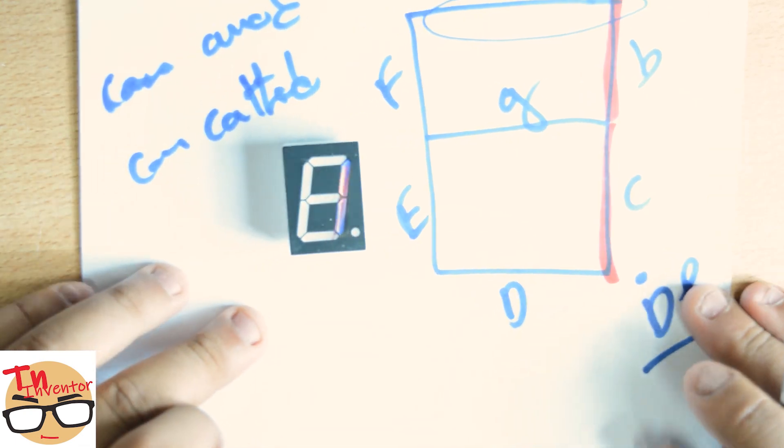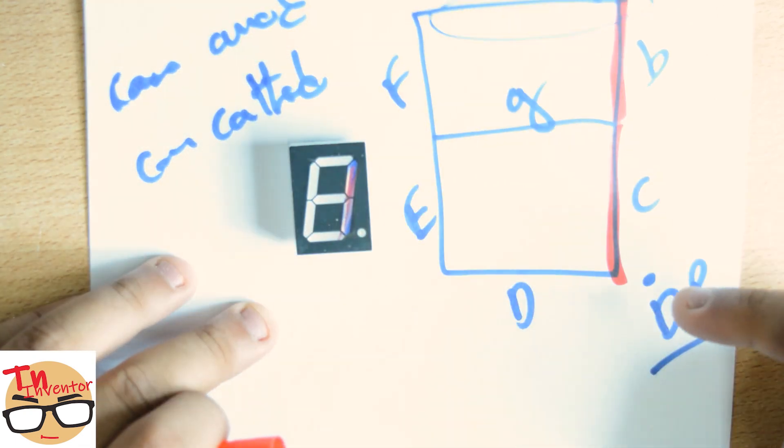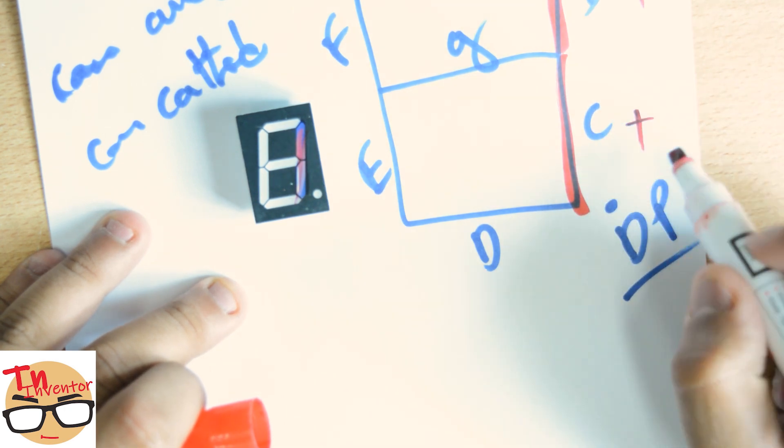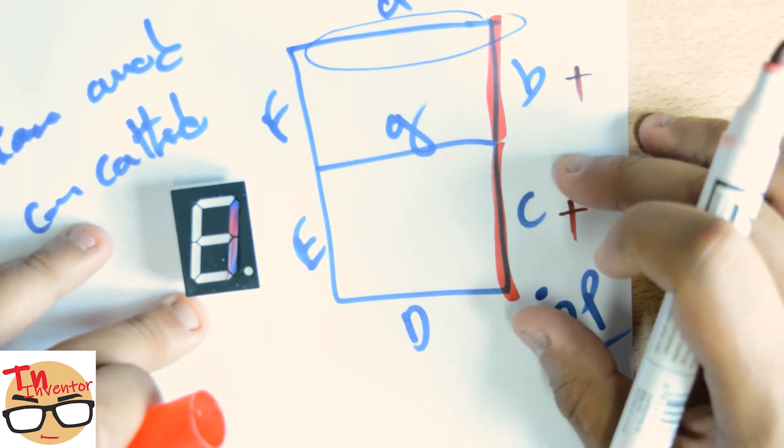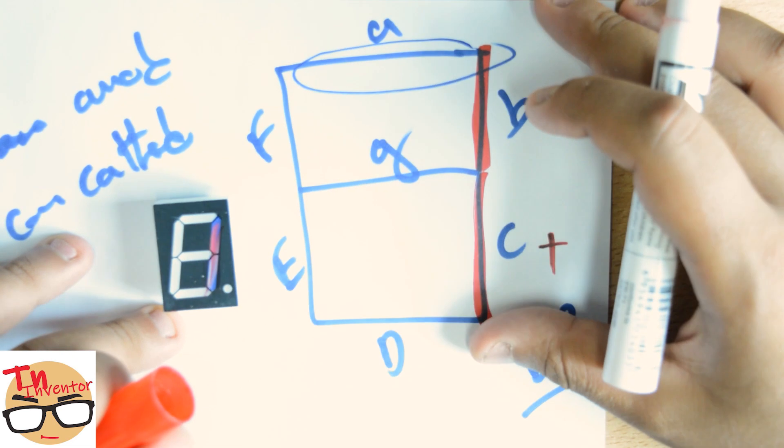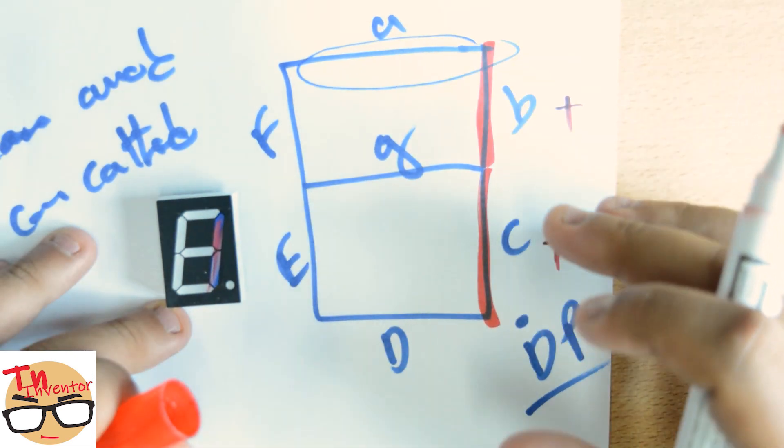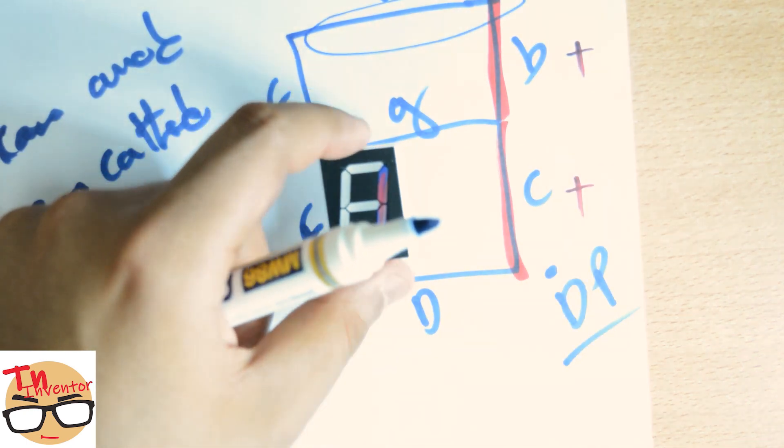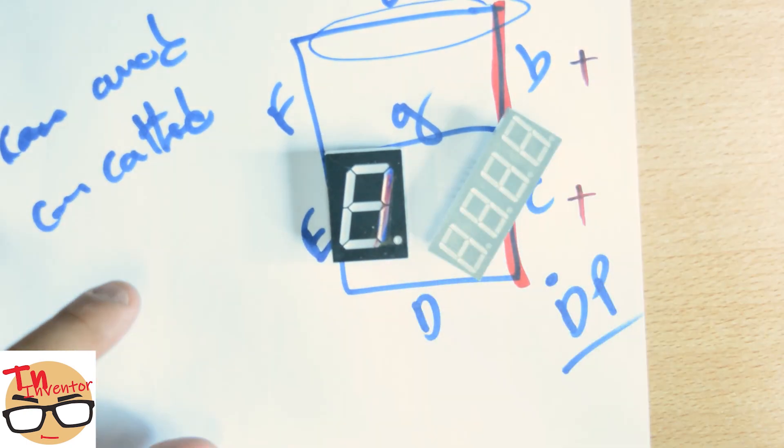To do that with a common cathode, you need to put B and C high. High can be 2 volts, 3 volts, or 5 volts. It depends on your type of seven-segment display because we have tons of variations.